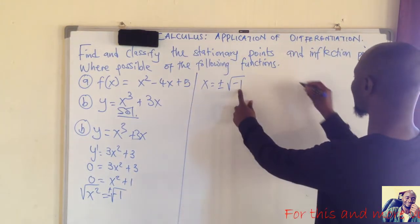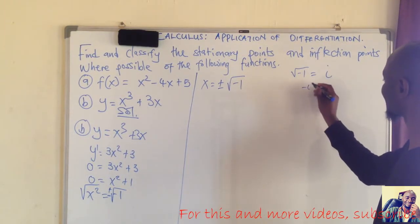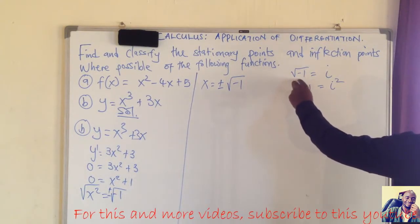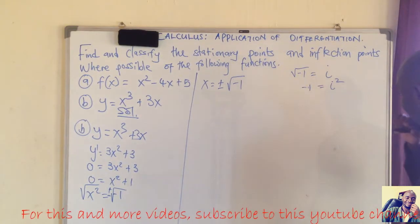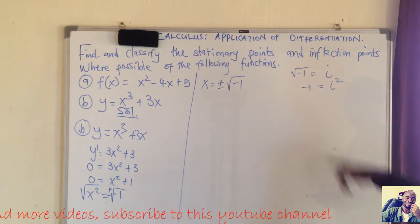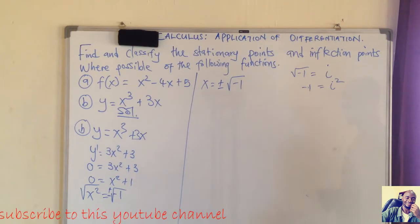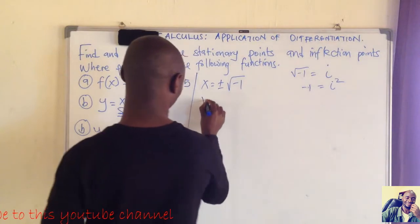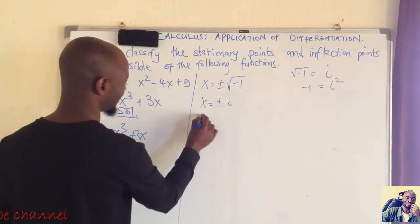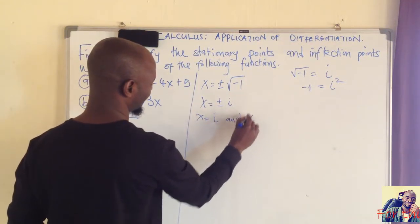To find x we take the square root of both sides, giving x = ±√(−1). The square root of −1 is the imaginary unit i, since i² = −1. In the real number system there is no square root of negative one, so we use this imaginary unit. Therefore x = +i or x = −i, and the critical points occur at x = i and x = −i.